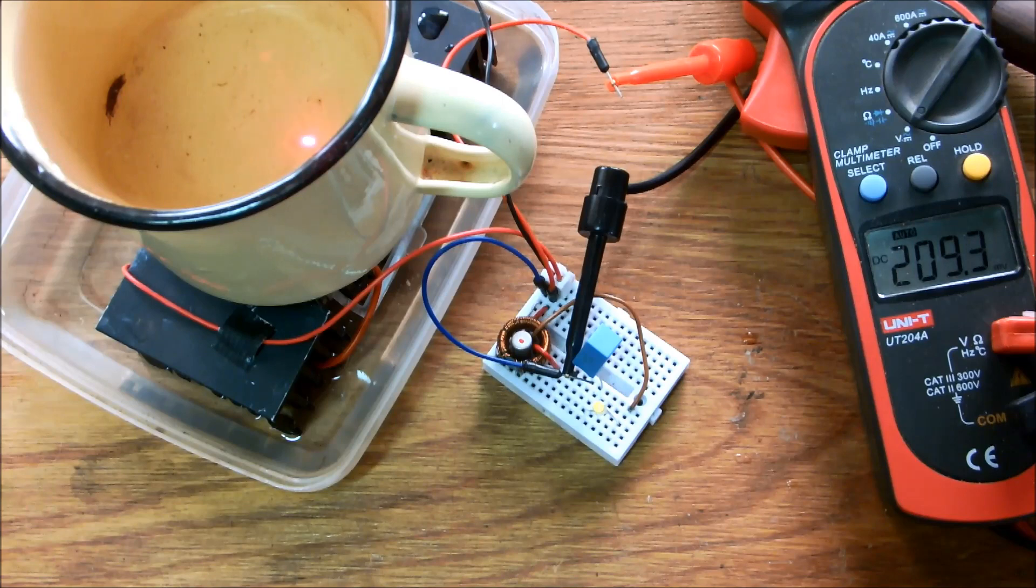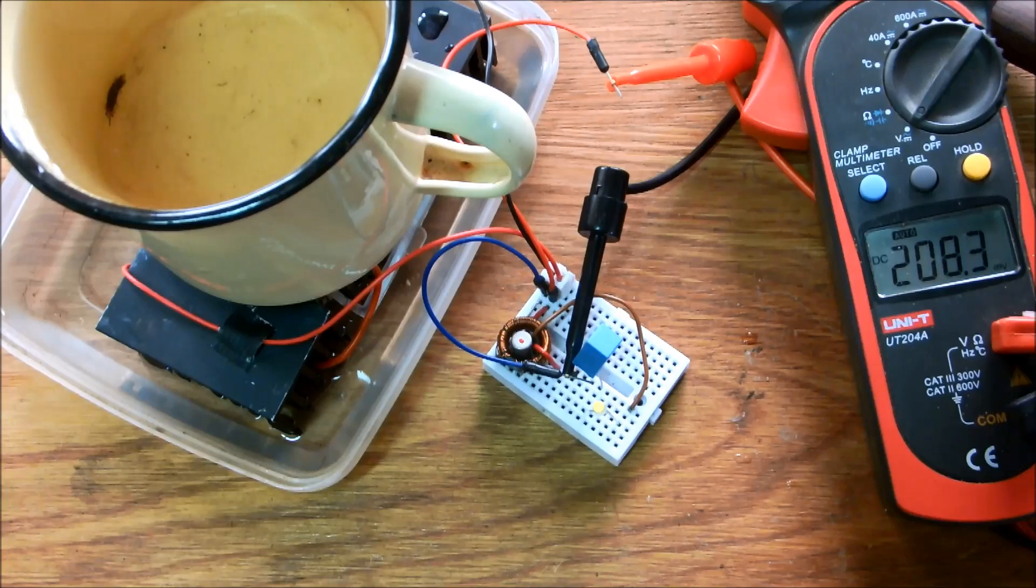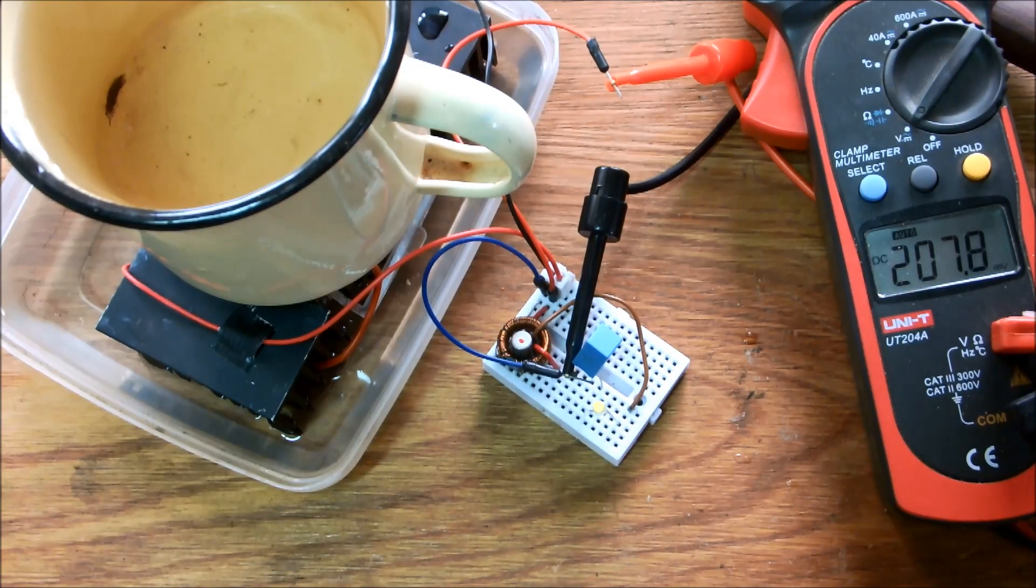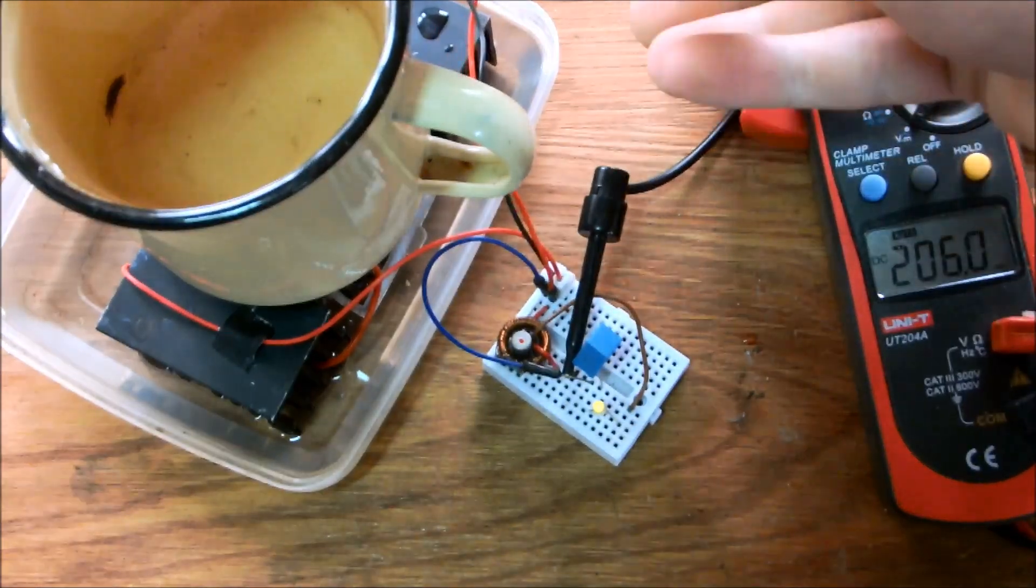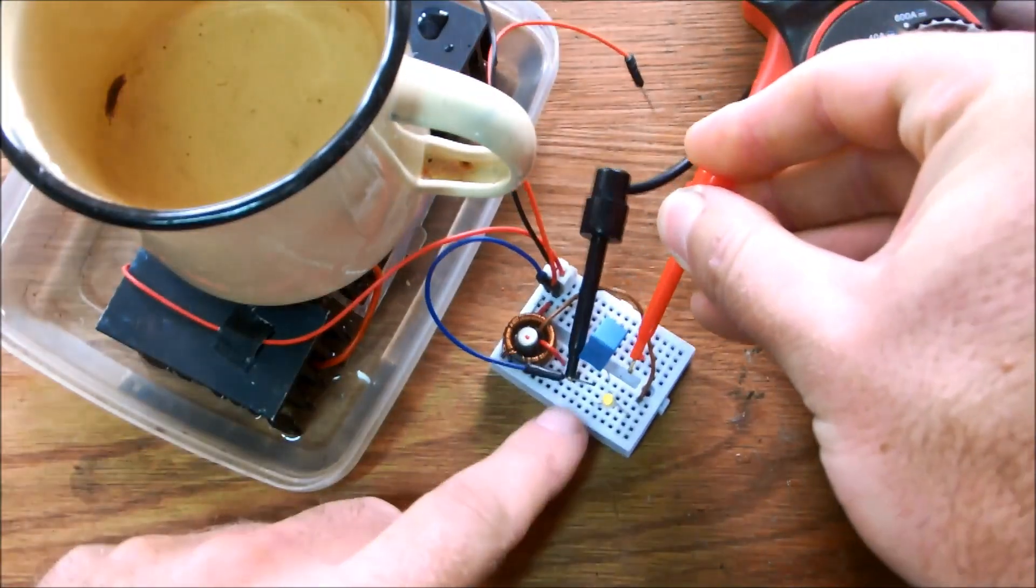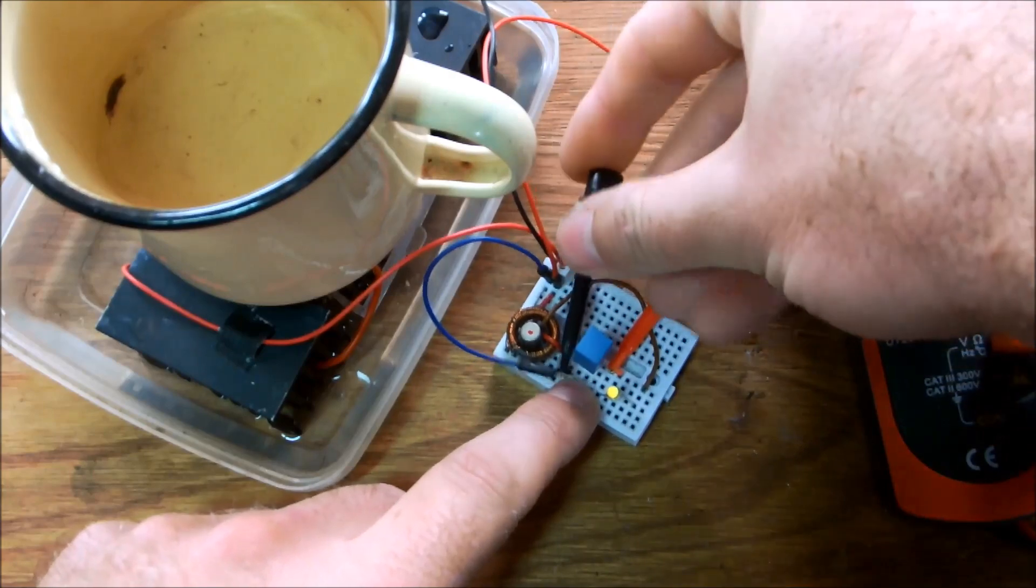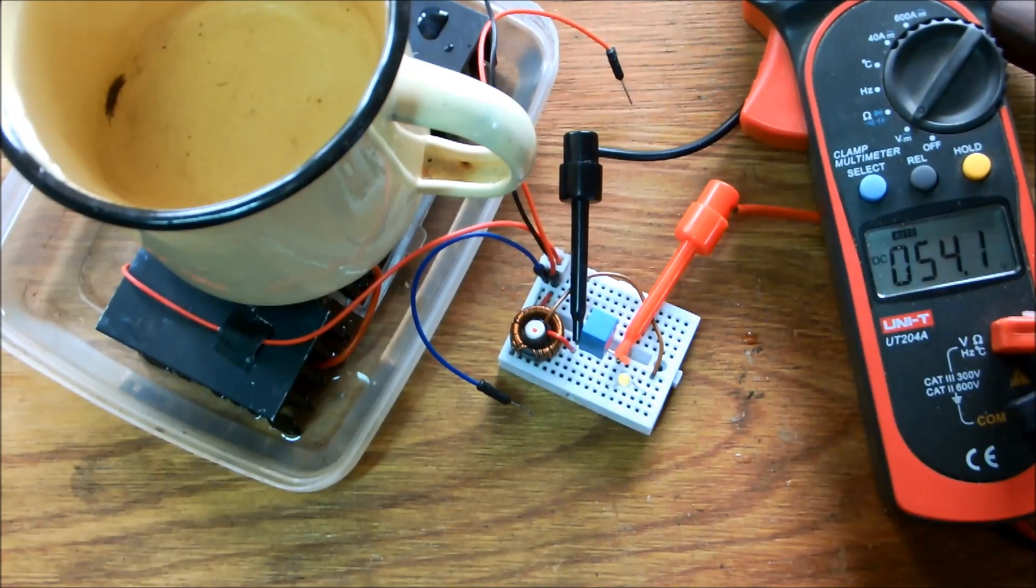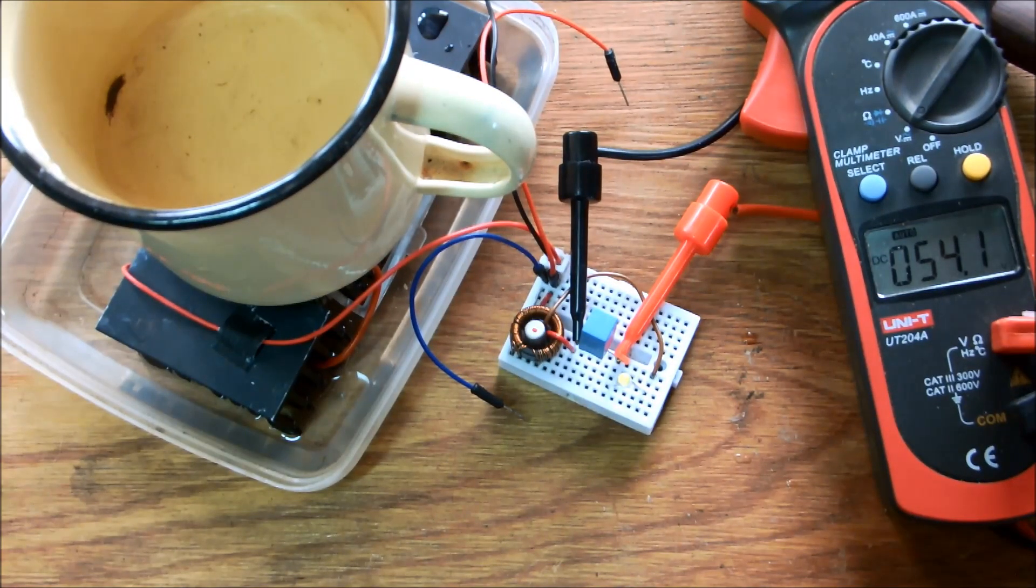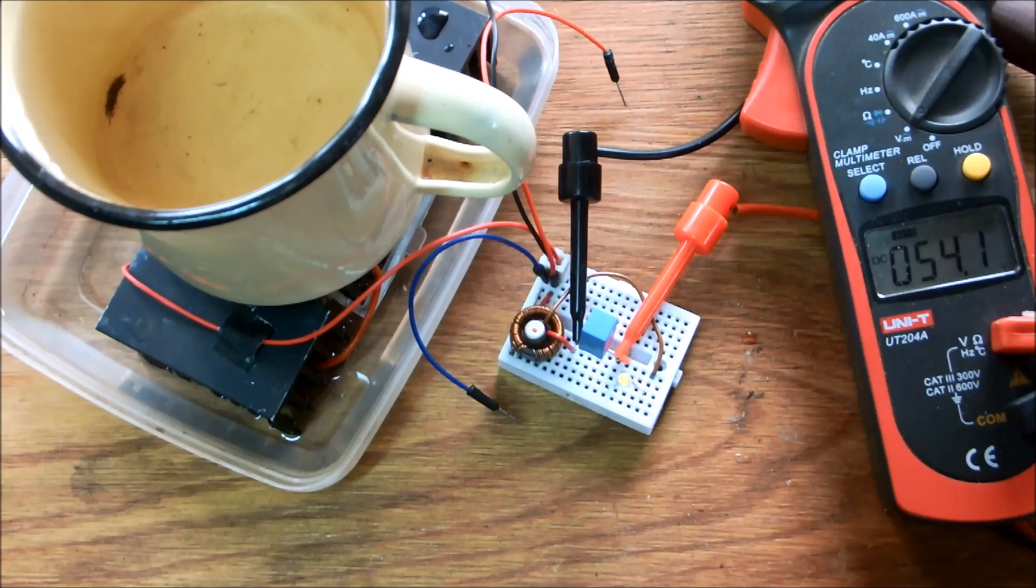The temperature in the cup is 50 and the temperature on the heat sink is 27. The output on the Peltier plate is just under 210 mV. Let's see what the voltage is on the capacitor, 54.2V. 54 divided by 0.21 that gives a decent voltage boost of 257.